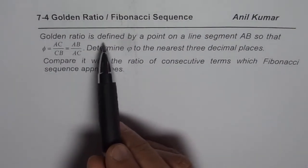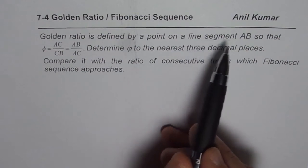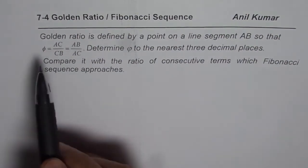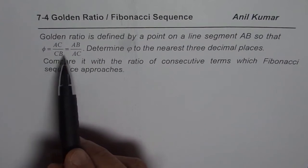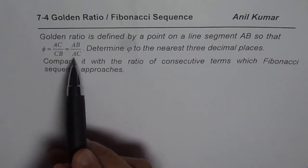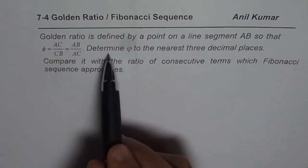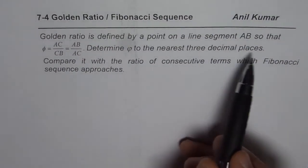Now the question here is, golden ratio is defined by a point on a line segment AB so that phi equals AC divided by CB equals AB divided by AC. Determine phi to the nearest three decimal places.